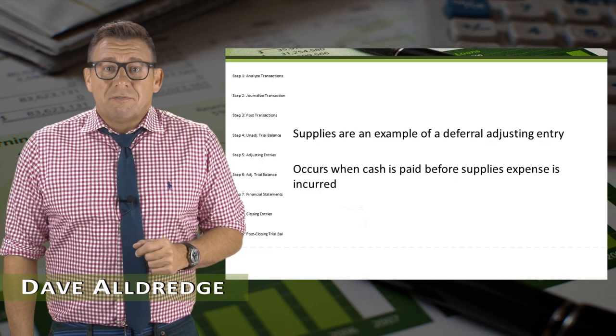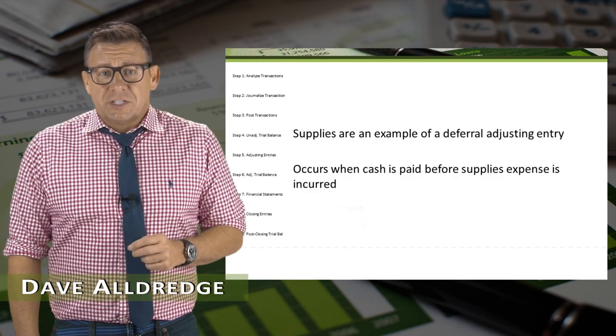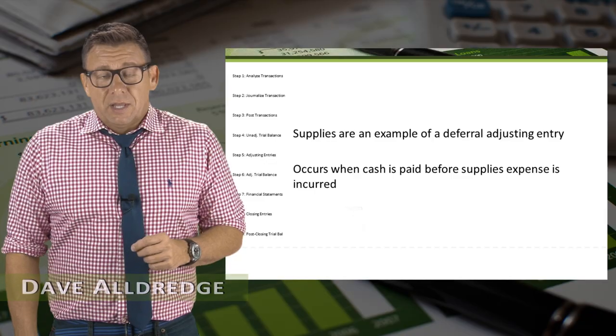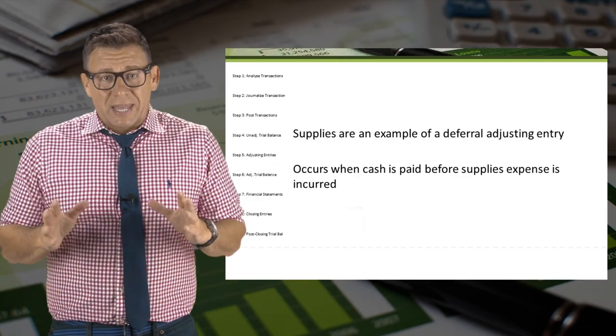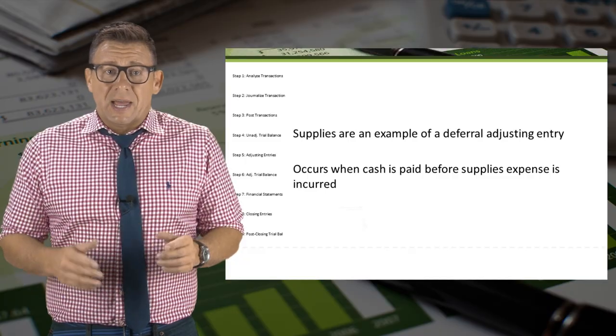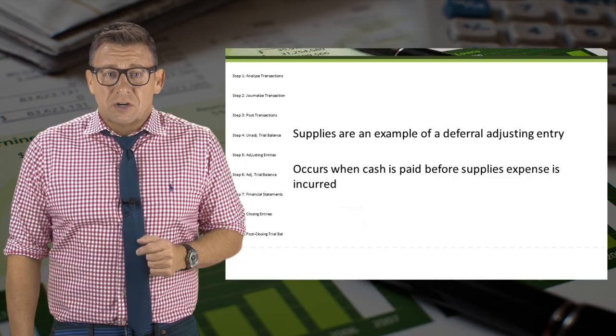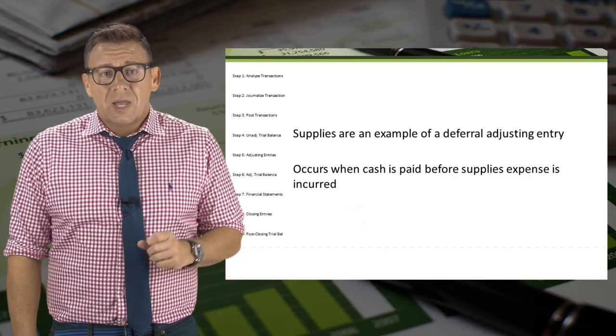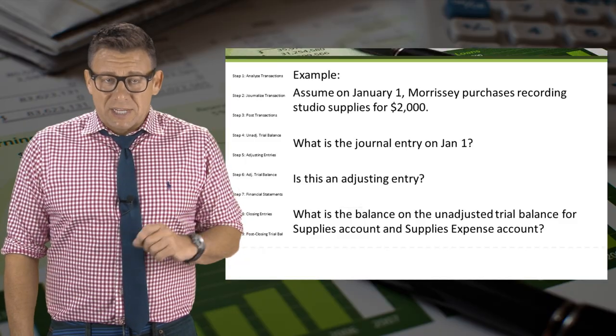Supplies is an example of a deferral adjusting entry. It occurs when cash is paid before supplies expense is incurred. Let's look at an example.